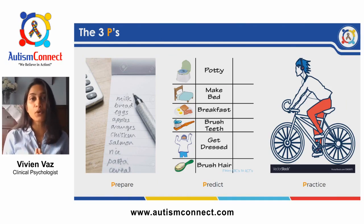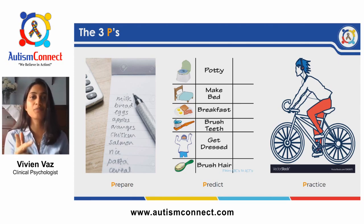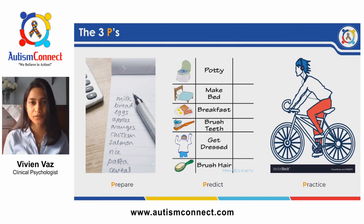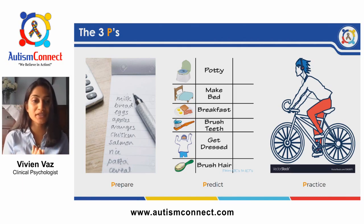There are three important P's when working with your child: preparation, predictability, and practice.